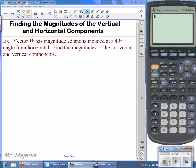Okay, now we're going to look at finding the magnitudes of the vertical and horizontal components of specific vectors. The example here says vector W has magnitude 25, so that's the actual vector itself, and is inclined at a 40 degree angle from horizontal. Find the magnitudes of the horizontal and vertical components.